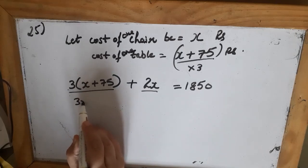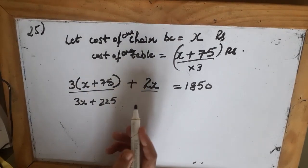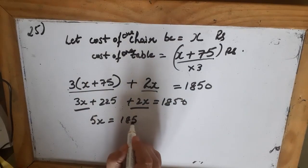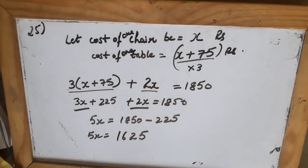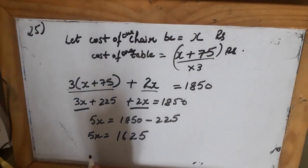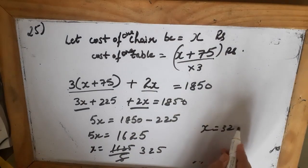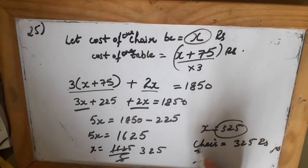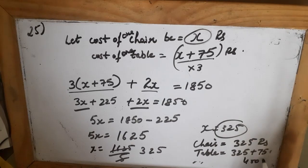Solving: 3(x plus 75) plus 2x equals 1850. So 3x plus 225 plus 2x equals 1850. Then 5x equals 1850 minus 225, which is 1625. Dividing by 5 gives x equals 325. So the cost of the chair is Rs. 325 and the cost of the table is x plus 75, which is 400 rupees.